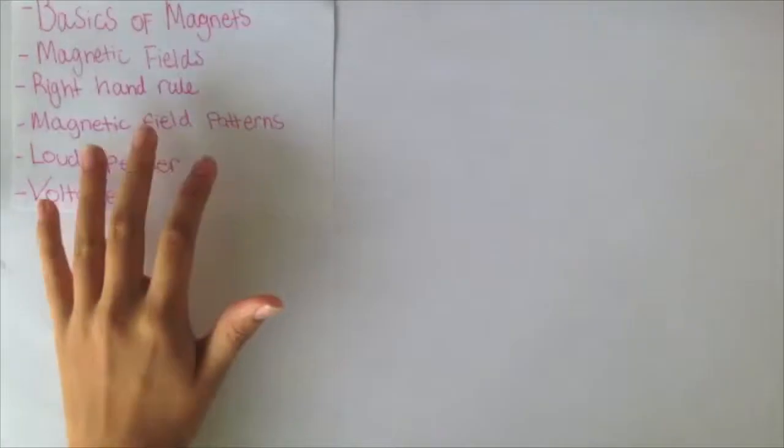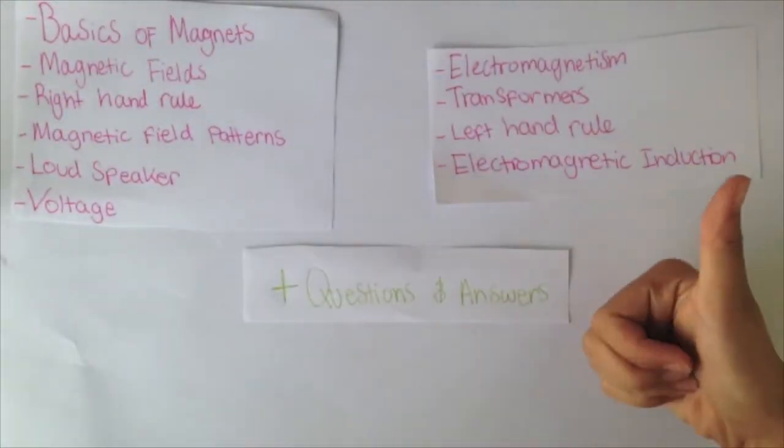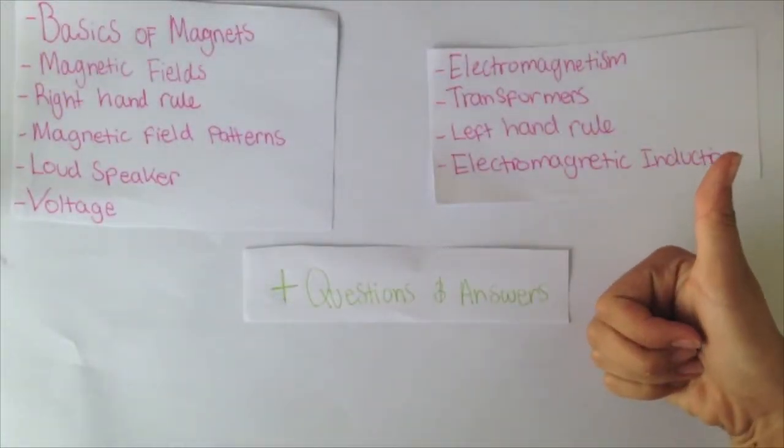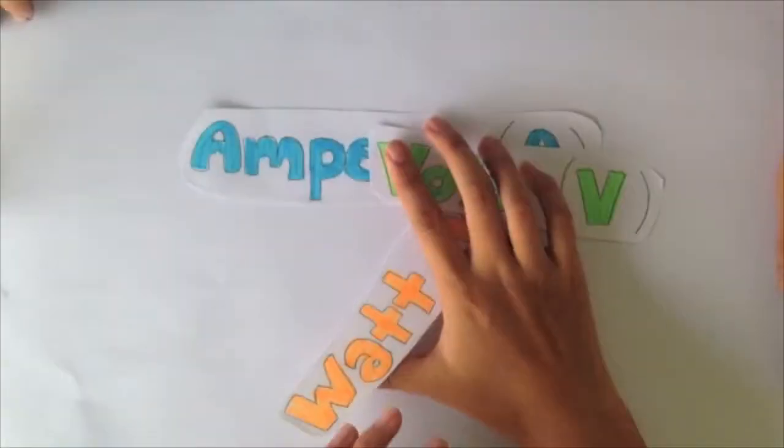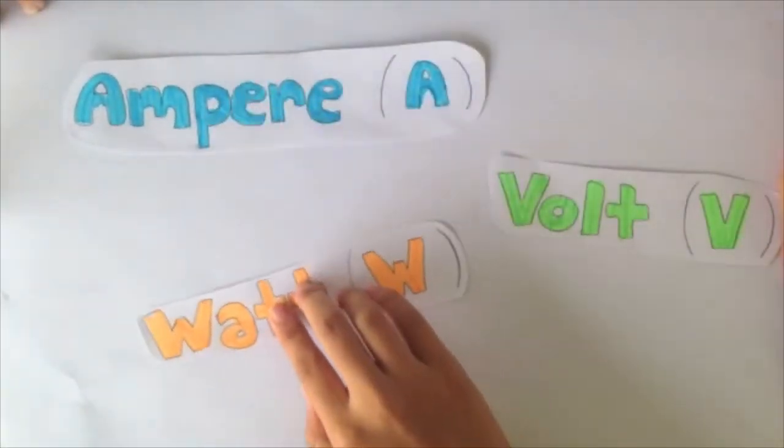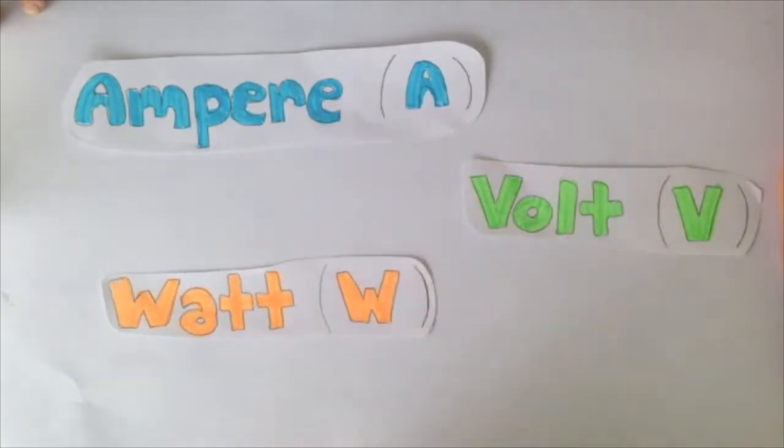Electromagnetism and magnetism. Here is a list of the few things that we will be learning today, and there is a quiz at the end. Here are the main units you will need to know for this topic: ampere, volts, and watts.